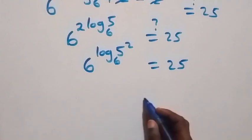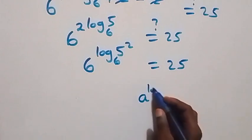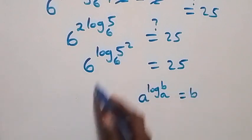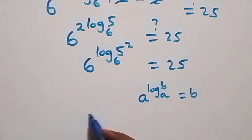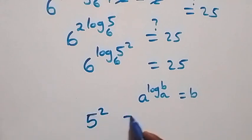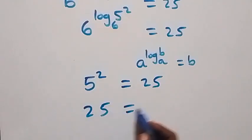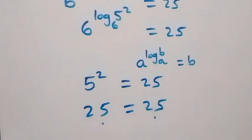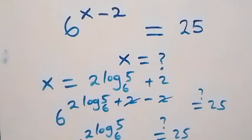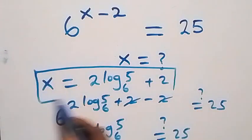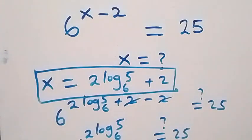Using the identity a raised to power log b to base a equals b, we get 6 raised to power 2 log 5 to base 6 equals 5 squared, which equals 25. The left-hand side equals the right-hand side, and we can conclude that x equals 2 log 5 to base 6 plus 2 satisfies the given problem.